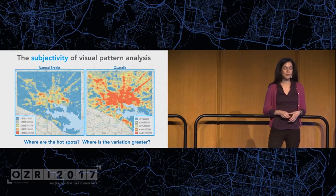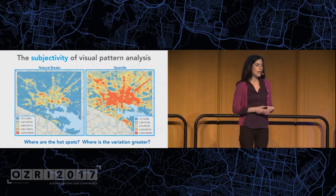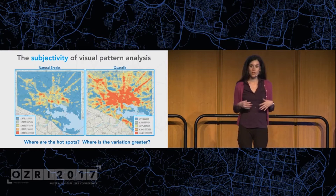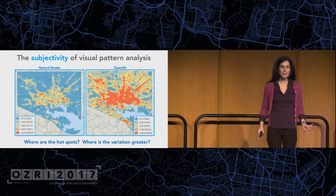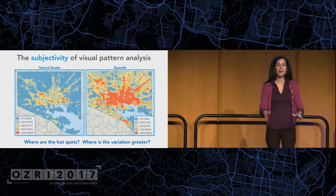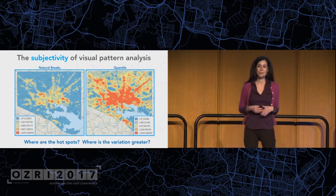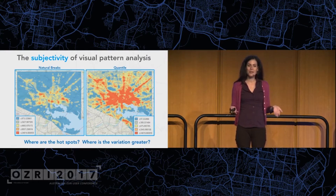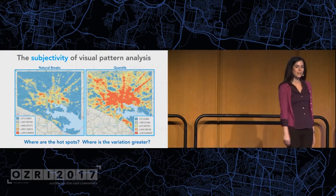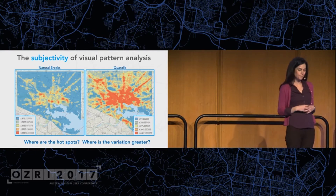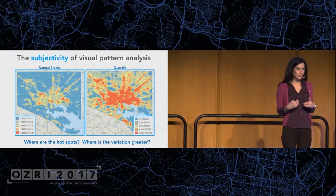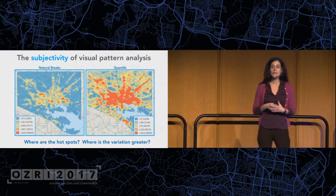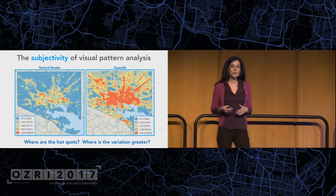Most people are not really familiar with how subjective creating a map like this might be. If I were a police chief and these were crime maps and I wanted more money in my budget next year, I might show the map on the right and say the crime problem is really severe. Then the following year, having received the money, I might show the map on the left and say I solved the problem of crime in Baltimore. But we as map makers know these are the same maps, just classified in a different way. There's a lot of subjectivity involved in how you visualize your data.